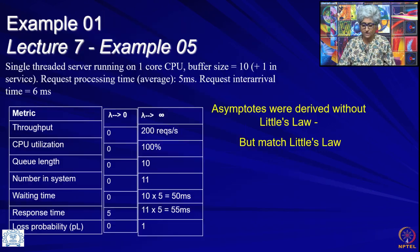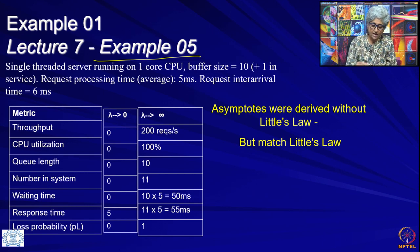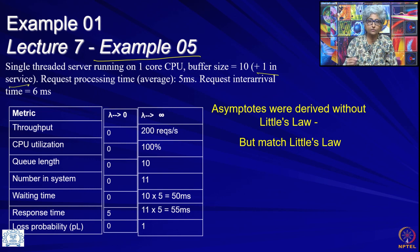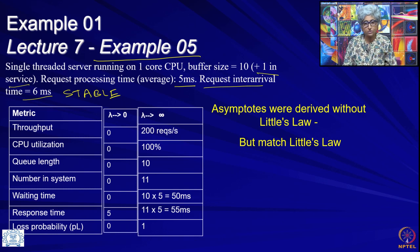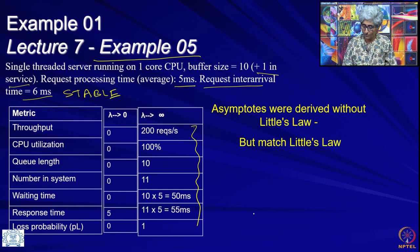Let us look at some examples. This recalls example 5 from lecture 7, where we did practice examples for utilization law and asymptotes. The example is of a single-threaded server running on a one-core CPU, buffer size is 10 plus 1 in the server, so total requests that can sit at the server is 11. Request processing time is 5 milliseconds, inter-arrival time is 6 milliseconds — a stable system. These asymptotes were derived without Little's law, but we can verify they follow from it.